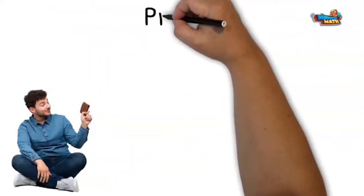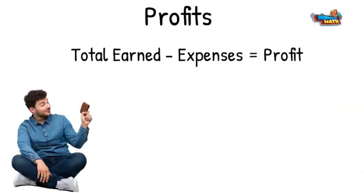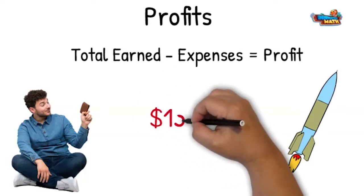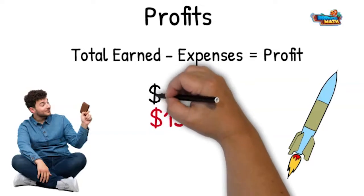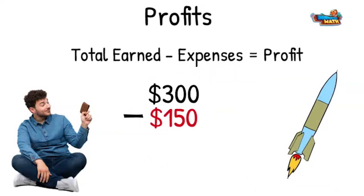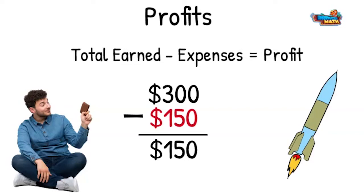Let's talk profit. Profit is the money made after taking away the expenses. In my spare time, I like to make rockets. The cost to make a rocket is $150. The selling price of the rockets is $300. To determine my profit, I take the total money earned minus the expenses: $300 minus $150 equals $150. This is my profit.